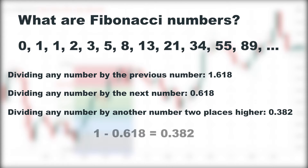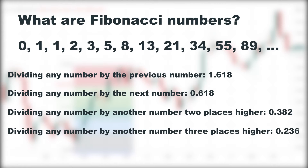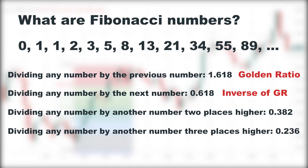Notice that 1 minus 0.618 equals 0.382. And if we divide any number by another number three places higher, the result is approximately 0.236, with the result getting closer to this as the numbers increase. The ratio of 1.618 is called the golden ratio and 0.618 is the inverse of the golden ratio. These amazing ratios are widely found in nature, biology, and architecture — for example, in human faces, animal bodies like snail shells, fruits, flowers, formation of rocks, spiral galaxies, and many other examples.